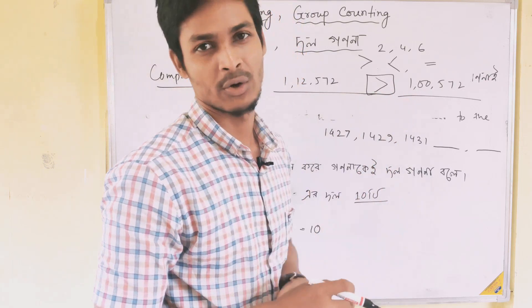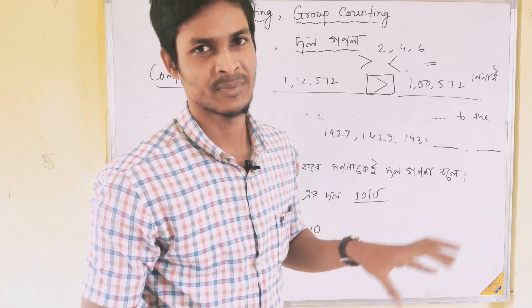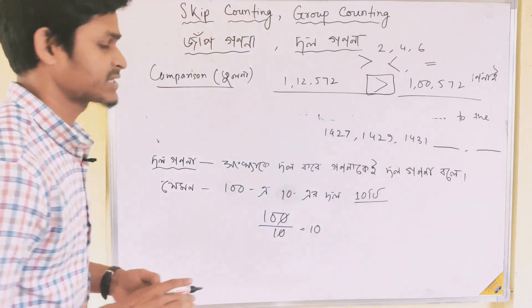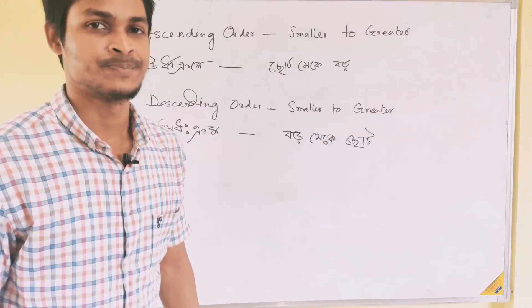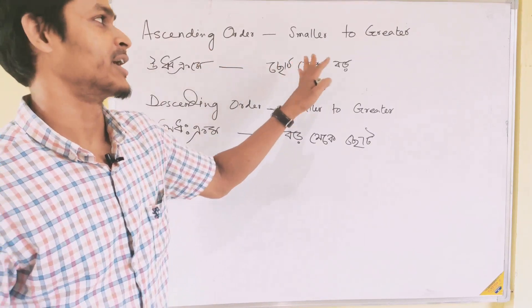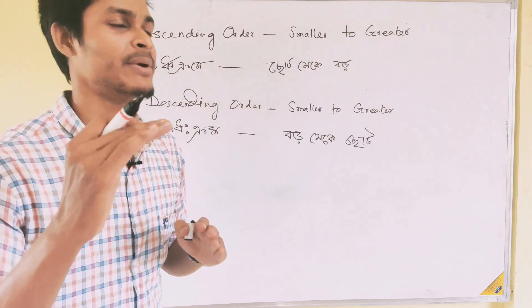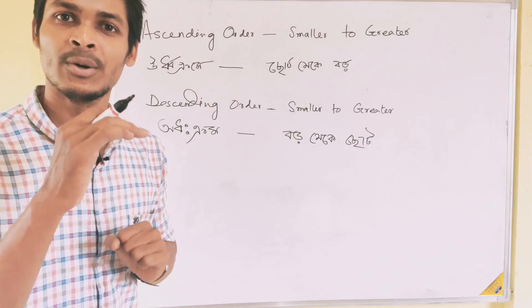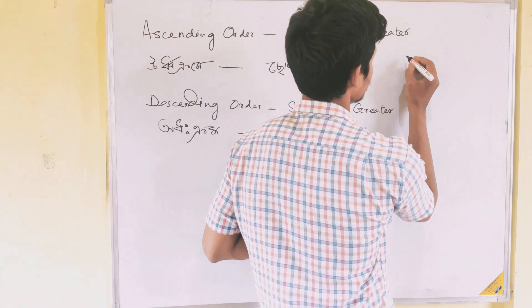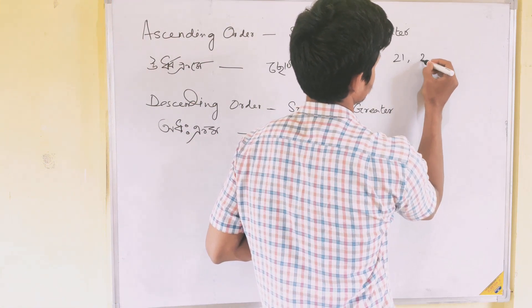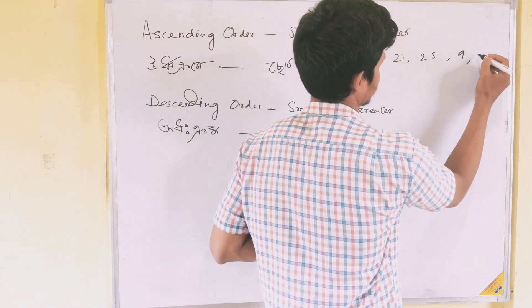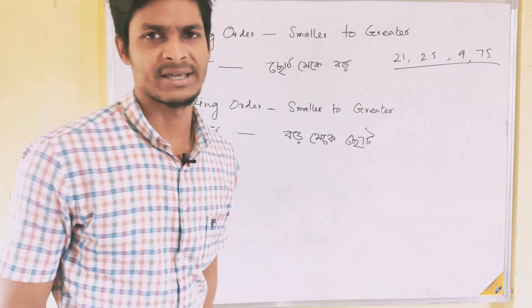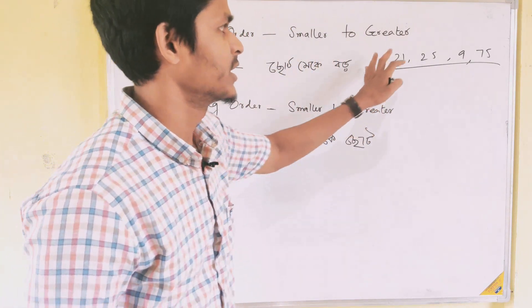Ascending and descending. Ascending is smaller to greater. Ascending is bigger. The numbers are: 21, 25, 9, 21, 25, 9, 75. Ascending is bigger.